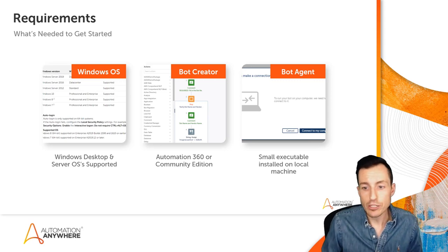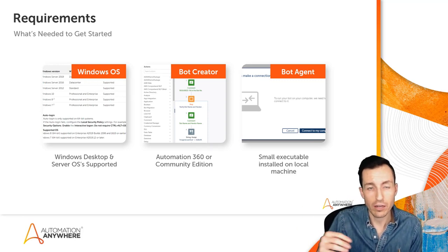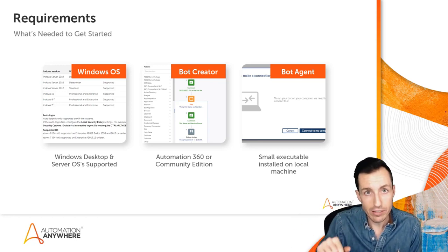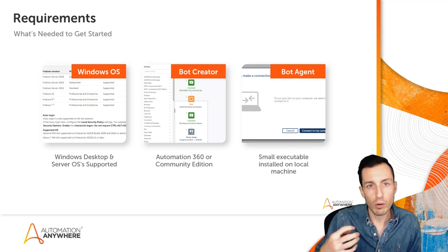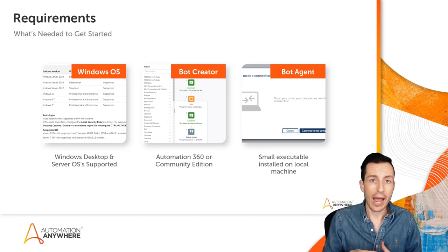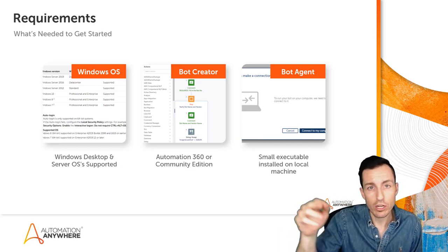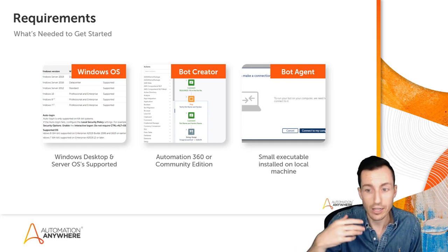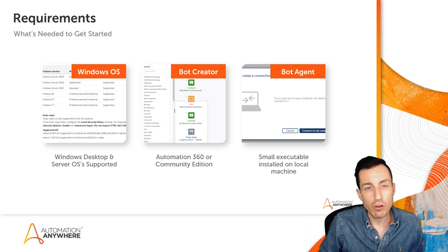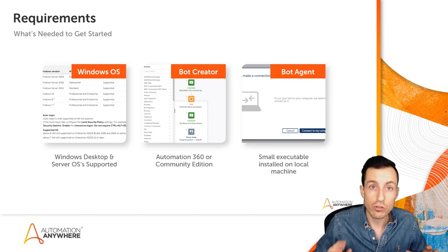The last component is having a bot agent installed. The bot agent is a small executable that gets installed on your machine after you've registered. You go through the registration process, log in, add the device to your control room, and at that point the bot agent gets installed. The bot agent is what connects your local machine to the central control room — when we test our bots, the control room sends the task down to your local machine, your local machine runs it, and that's how attended bot testing works.